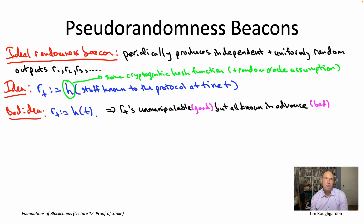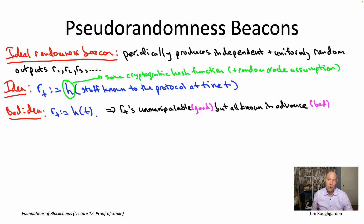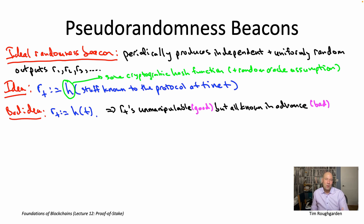We've mentioned several times the issues that come up with predictability. For example, if you're using the R_t's to select block proposers at different time steps, knowing the R_t's means knowing who the block proposers are going to be — a window to attack that block proposer, for example via denial of service, to force them to skip their turn. With this extreme form of predictability, with everything known at the beginning of time, other big issues come up as well. For instance, in our VRF discussion, we talked about the importance of a warm-up period where people must commit to a public-private key pair before knowing the messages they'll be signing. But if all the R_t's are known from the beginning of time, no warm-up period is going to save you.